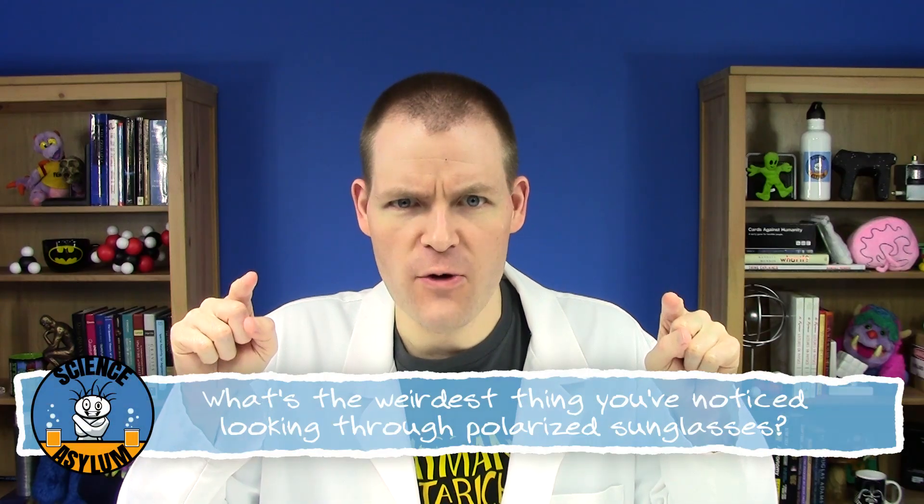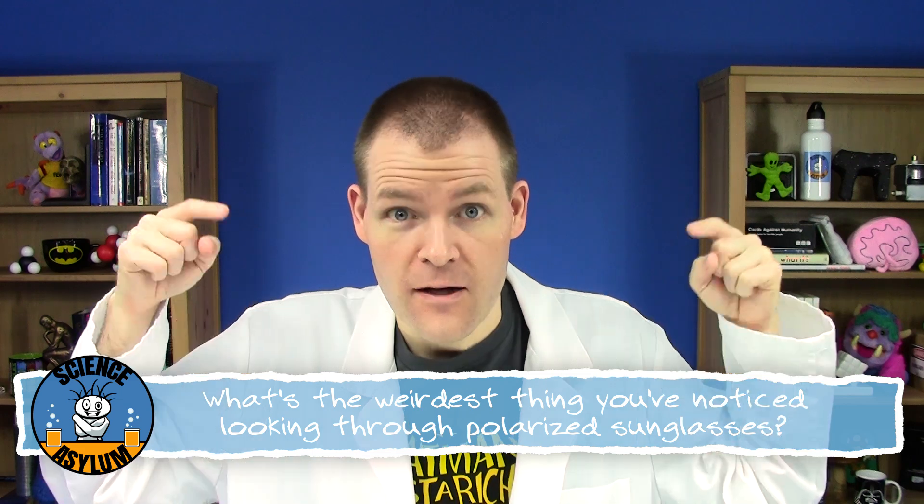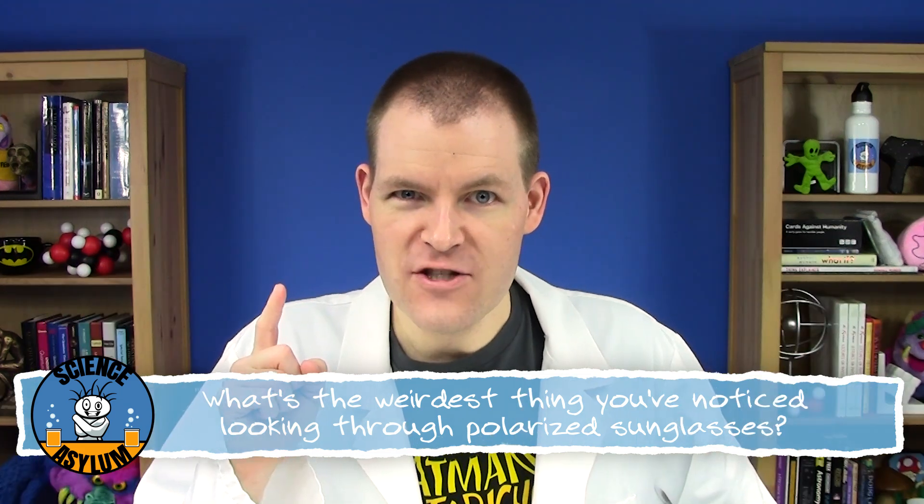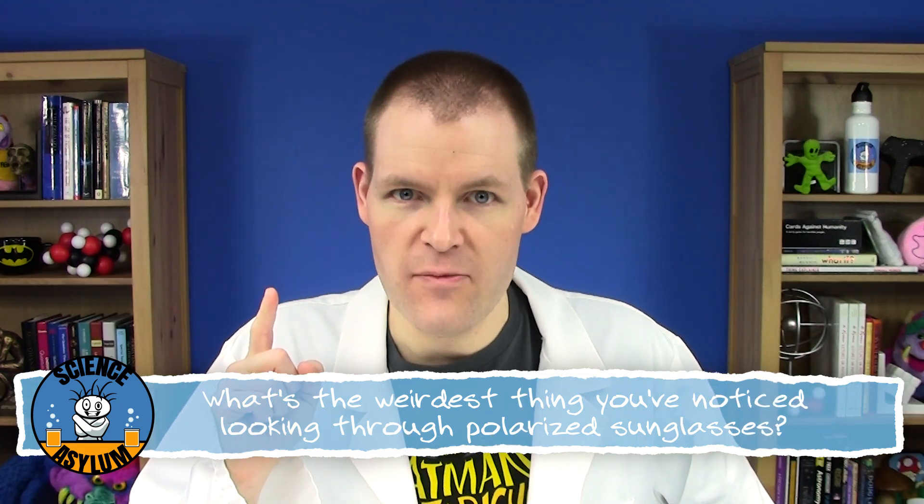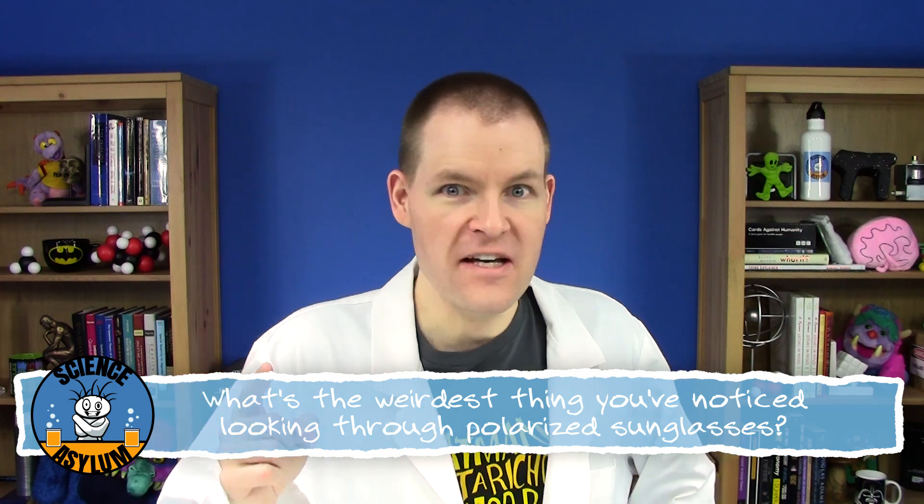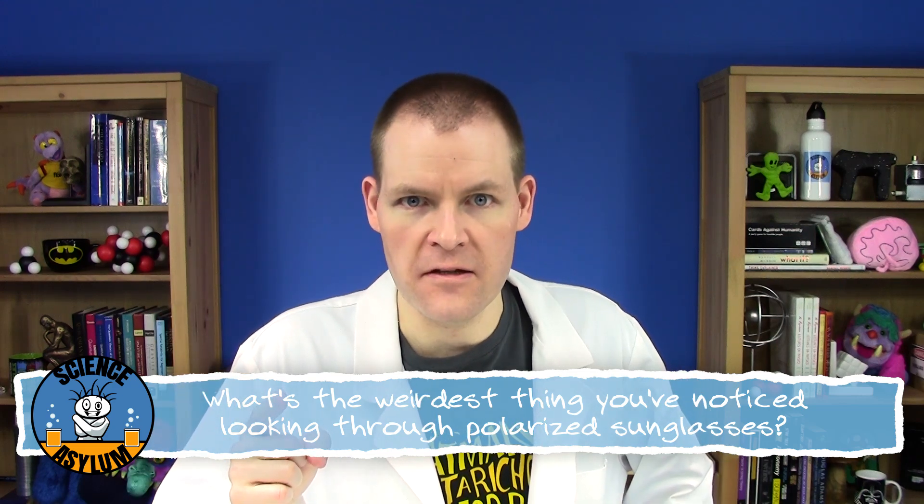So to summarize, polarized sunglasses use long chains of molecules that can only vibrate in one direction to block a little over half of normal light in almost all glare. Plus, they're super stylish! What's the weirdest thing you've noticed when looking through polarized sunglasses? Please share in the comments. Thanks for liking and sharing this video. Don't forget to subscribe if you'd like to keep up with us. And until next time, remember, it's okay to be a little crazy.